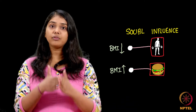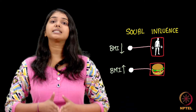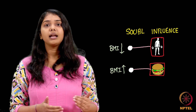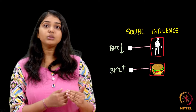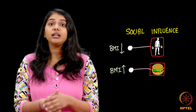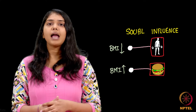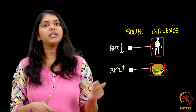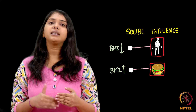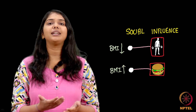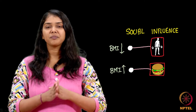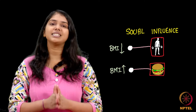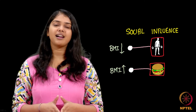What do we do? For every node which is connected to a gym, we reduce its BMI by one every iteration, and every node which is connected to an eat-out place, we increase its BMI by one every iteration. We just do this and the social influence is captured.